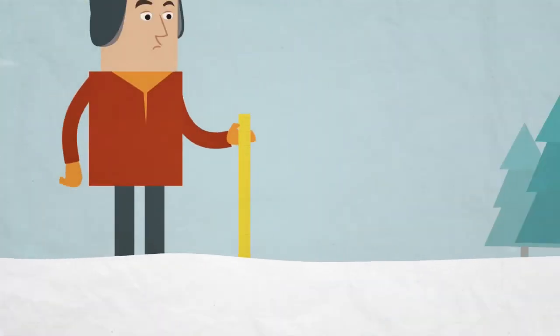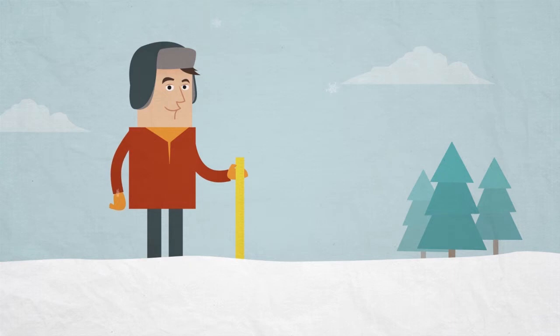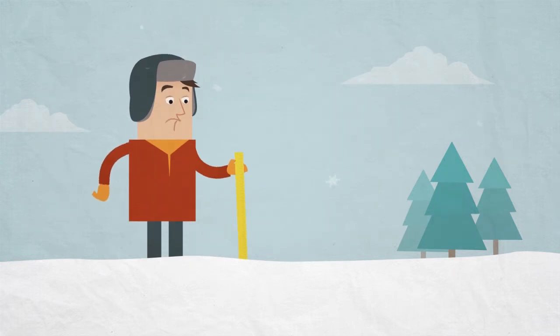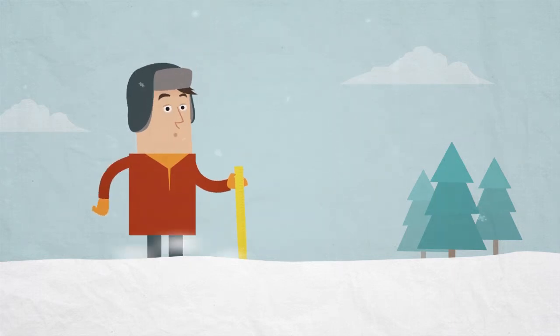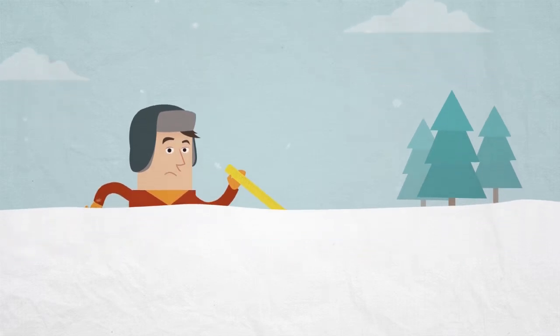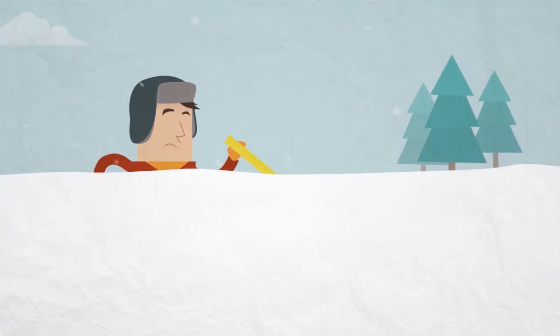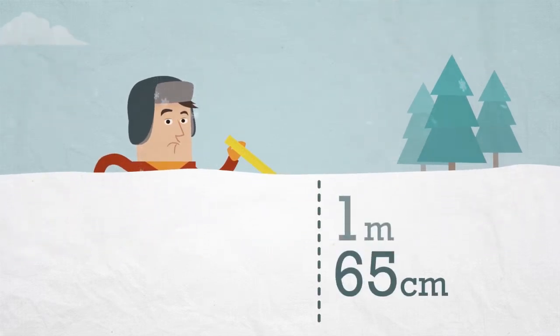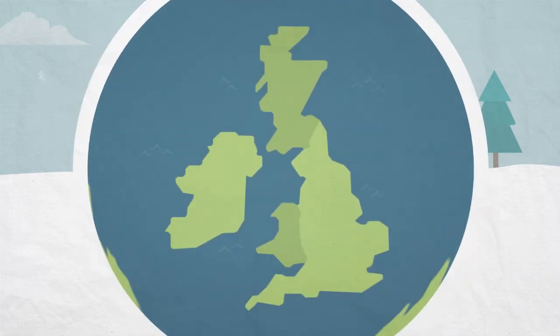We are able to measure how much snow is lying on the ground using a ruler. The deepest snow ever recorded in the UK was an enormous one metre and 65 centimetres deep. It fell in North Wales during the very snowy winter of 1947.